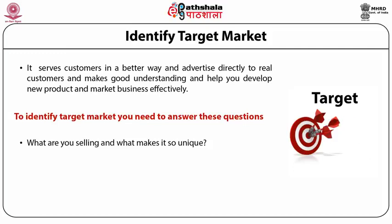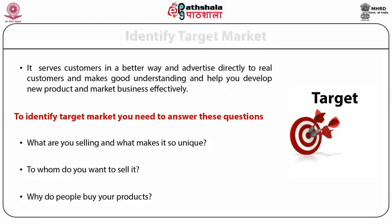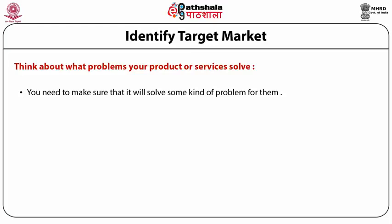What are you selling and what makes it unique? To whom do you want to sell it — that is, who is your target customer? Why do people buy your products? After answering these questions, consider what problems your product or service solves. If you want people to buy your product, you need to make sure it solves some kind of problem for them, and you should try to be as specific as possible.